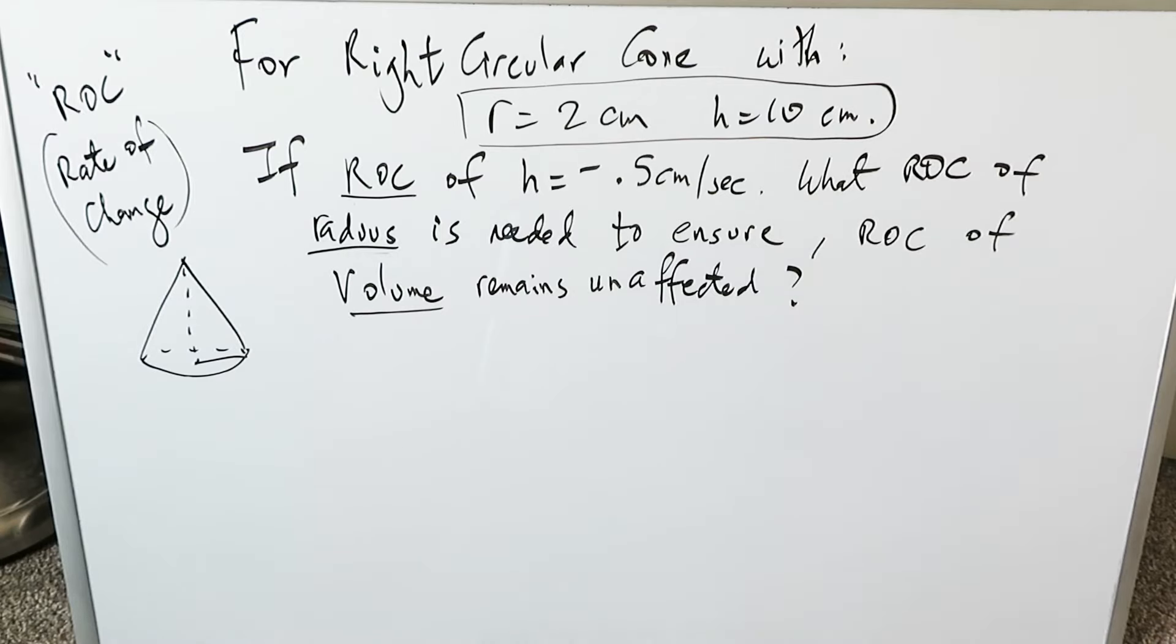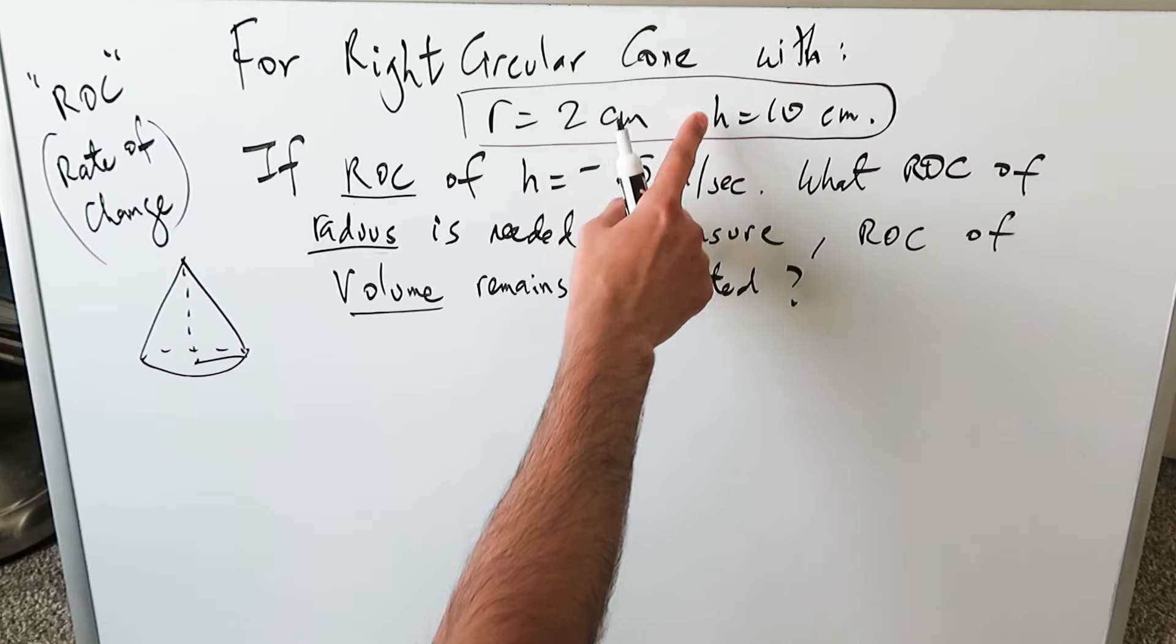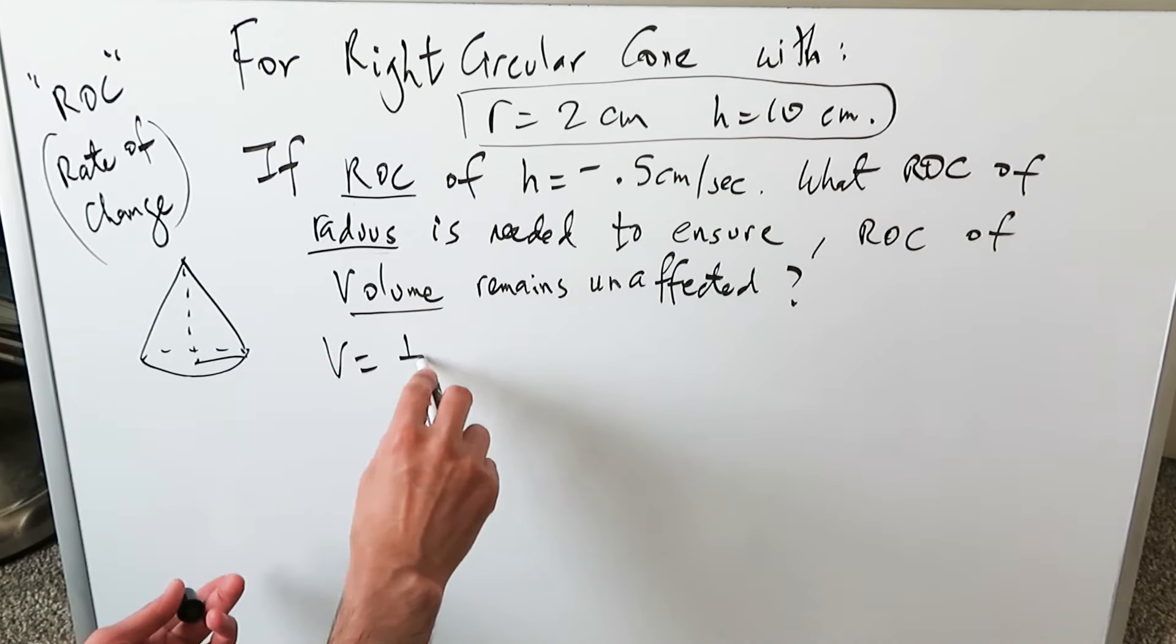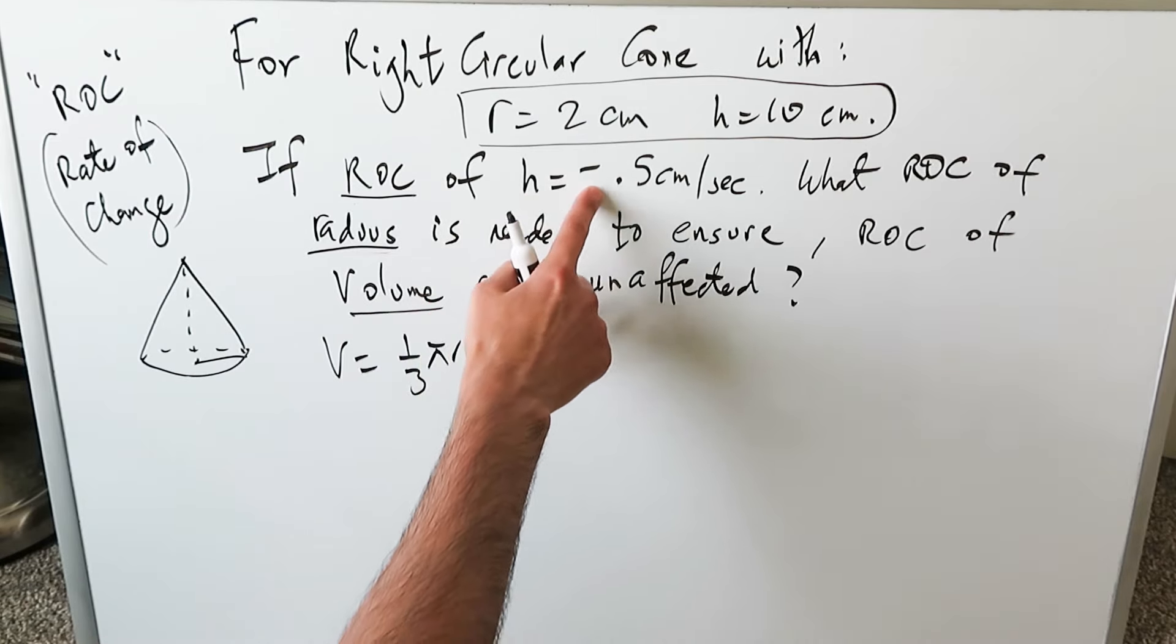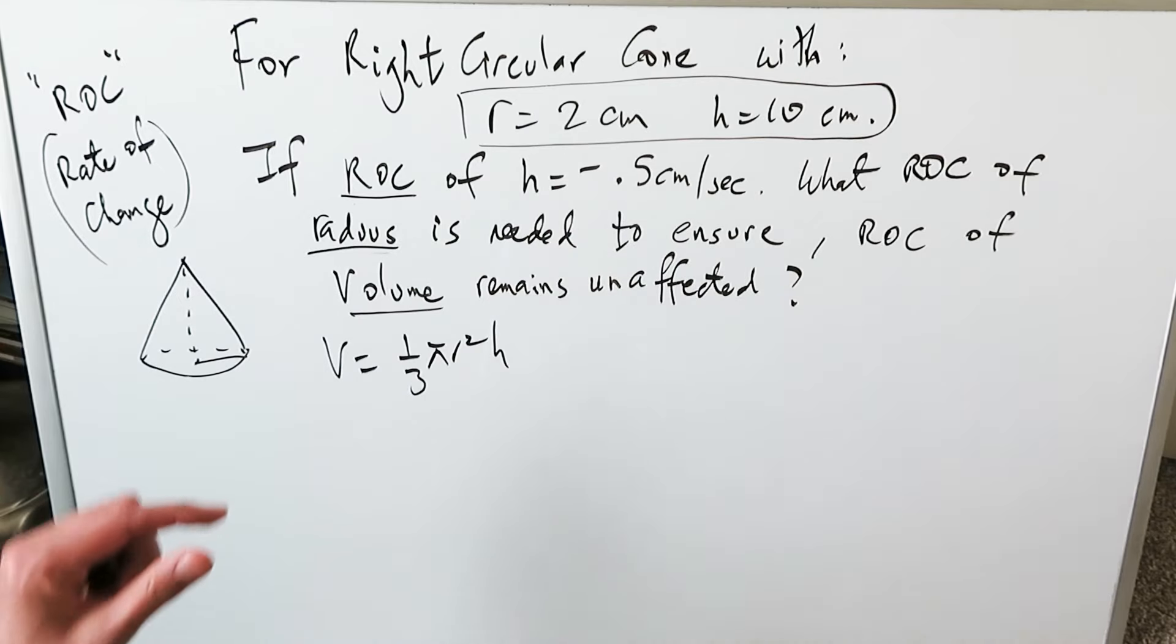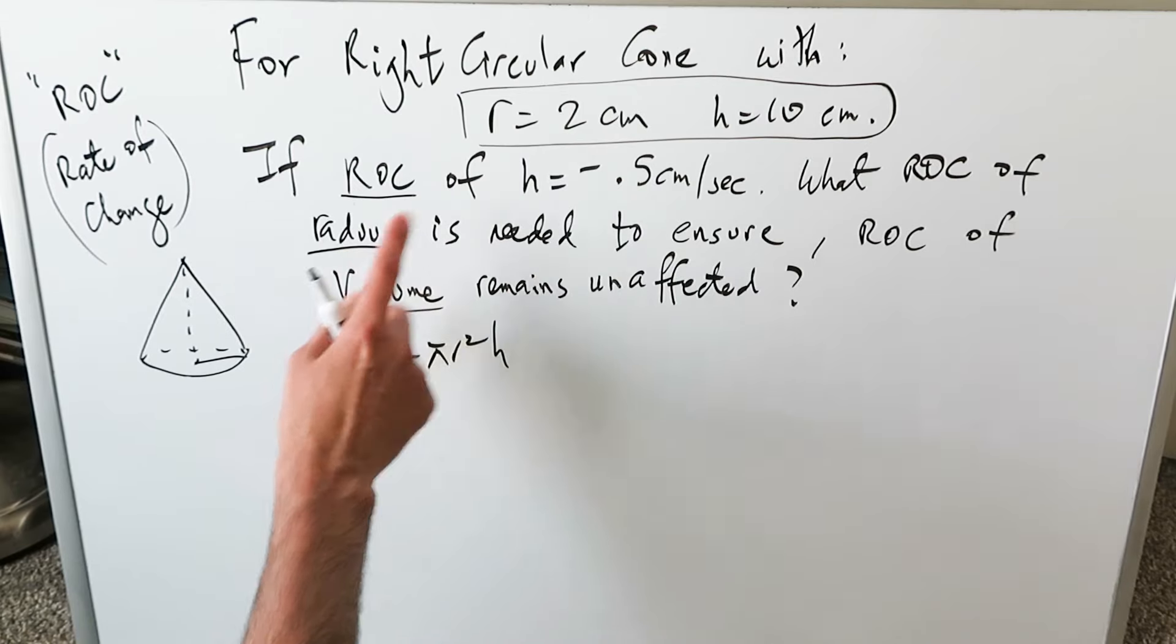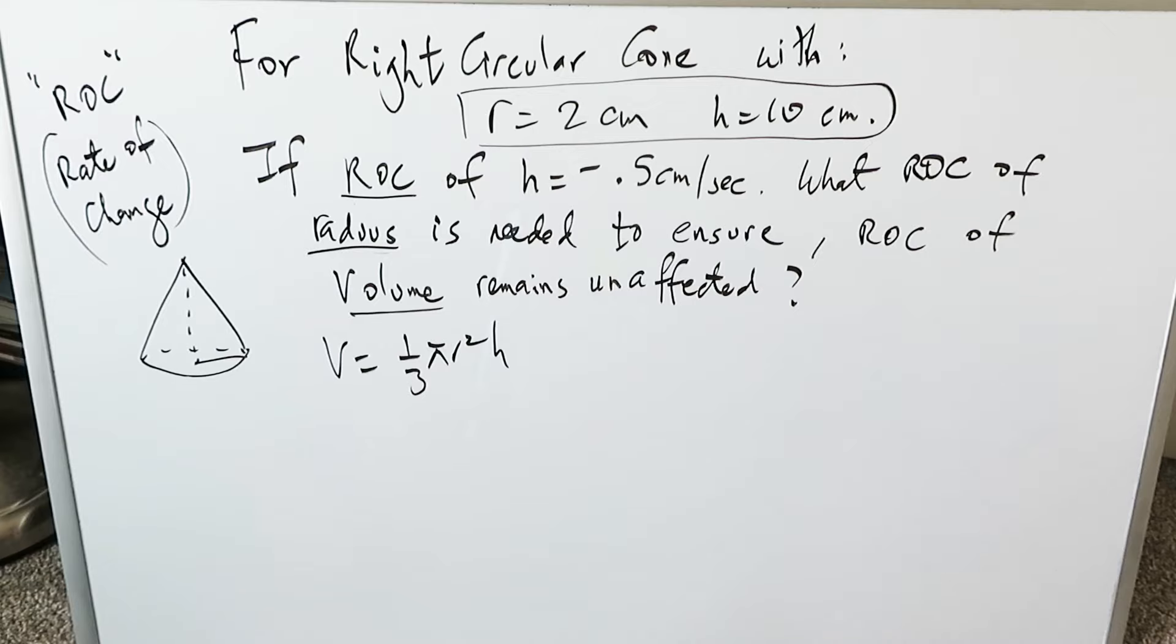It seems like there's a lot going on but it's not too hard. You know you have a radius here of 2, height of 10. You know volume of a right circular cone is 1 over 3 π r² h. The height is shrinking at a rate of minus 0.5 centimeters per second because the negative means it's getting smaller with time. What is the rate of change of radius that you would need to ensure that the rate of change of volume will remain unaffected, meaning the volume would not change?